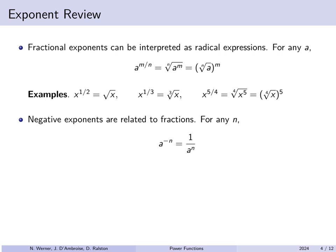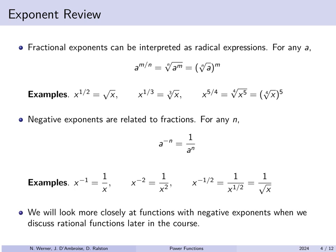Negative exponents are related to fractions. For any real exponent n, a^(-n) equals 1 over a^n. For example, x^(-1) is 1/x, x^(-2) is 1/x², and x^(-1/2) is 1 over the square root of x. These exponent laws hold for any real value, including fractions, not just integers. We'll look more closely at functions with negative exponents later when we discuss rational functions.